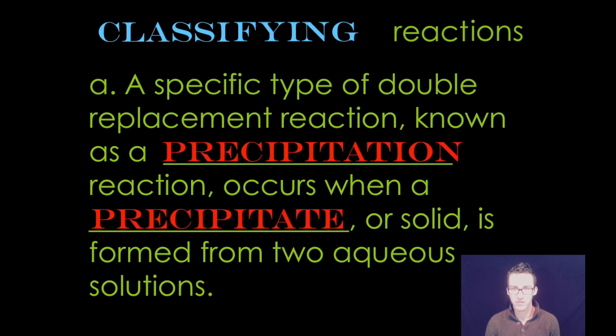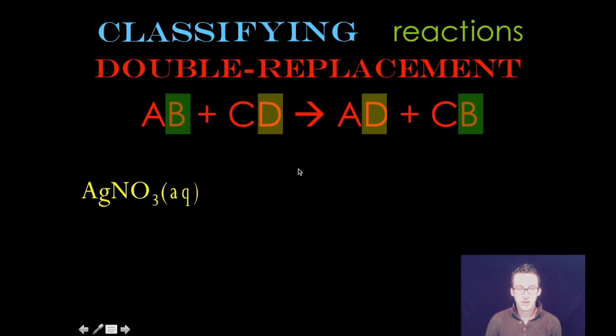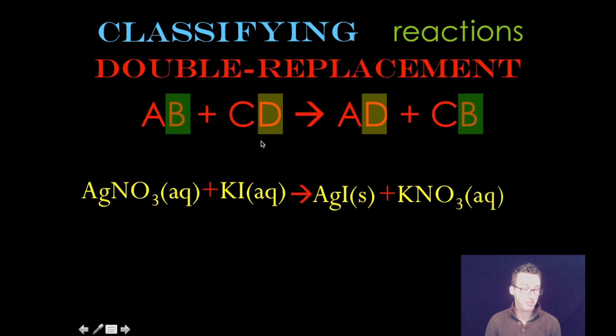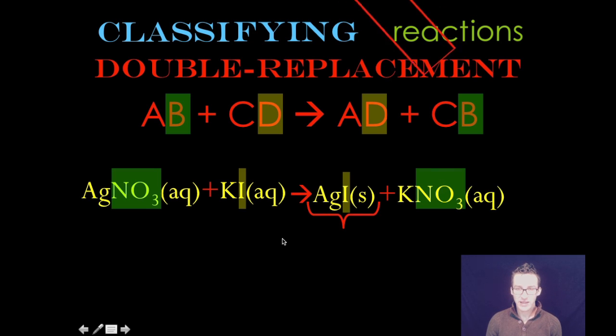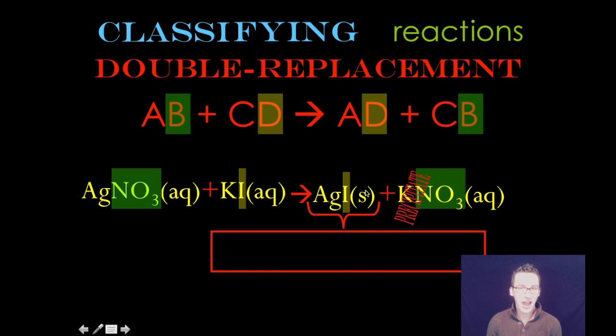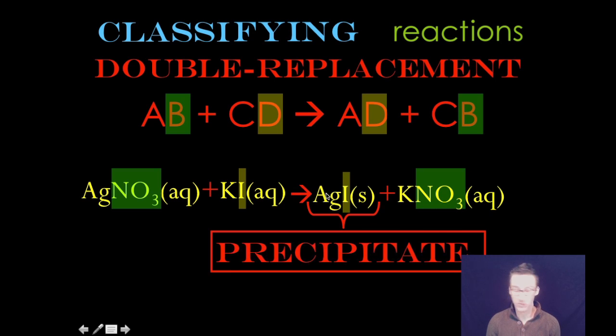Which is going to occur when we have the formation of a precipitate or a solid. It's just a specific type of double replacement reaction. As we look at an example of a double replacement reaction that is in particular a precipitation reaction, however, recognize that this is a precipitate that has formed. How do I know this is the precipitate? Well, what is a precipitate? It is a solid. These other ones are aqueous which means that they are still dissolved in water.